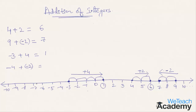The final example is minus 4 plus minus 2. You need to first mark the number minus 4 on the number line, which is on the left area, and then move two steps towards the left, because this time we are adding a negative integer to another negative integer. The answer comes down to minus 6.